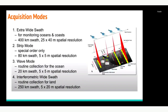There are multiple acquisition modes in Sentinel-1 operations. The Extra Wide Swath mode is mostly used in oceans and coastal applications. The Stripmap mode is special order only and can be up to 80 kilometers with 5-meter resolution. Wave mode is also for oceans. The Interferometric Wide Swath mode covers up to 250 kilometers at 20-meter resolution and is used for routine land collection.